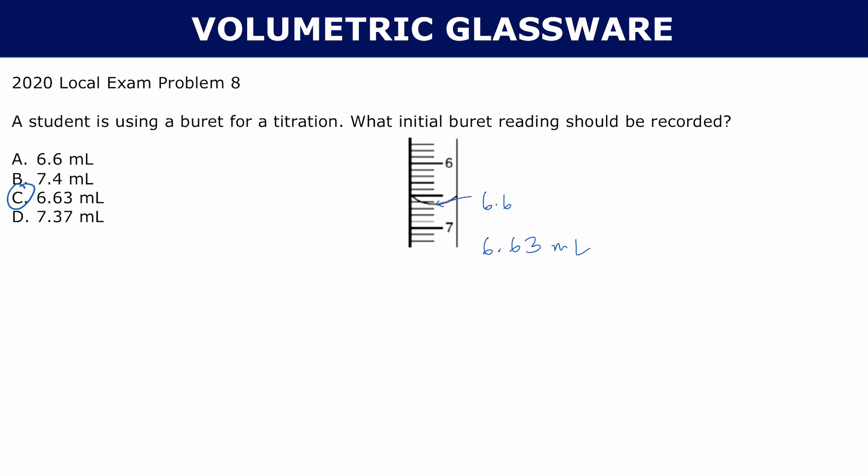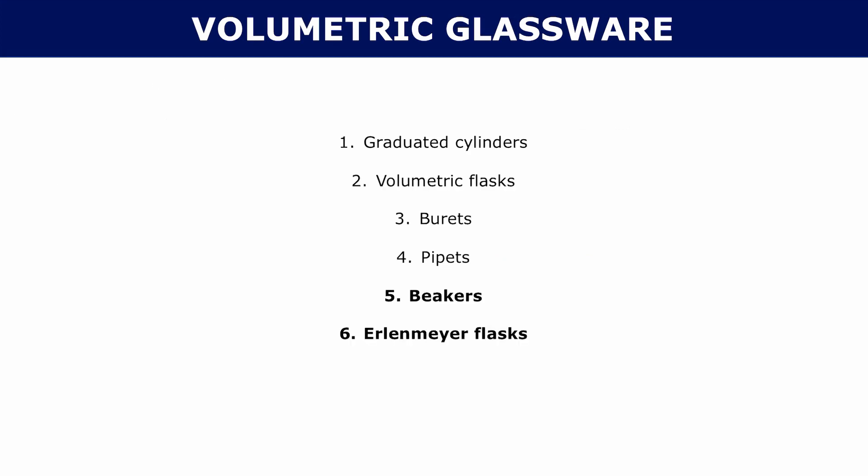The reason I'm allowed to make that 0.03 estimate is because, again, you're allowed to make one more digit than you're certain of. Now that we know how to read volumetric glassware, let's look at different types of them.